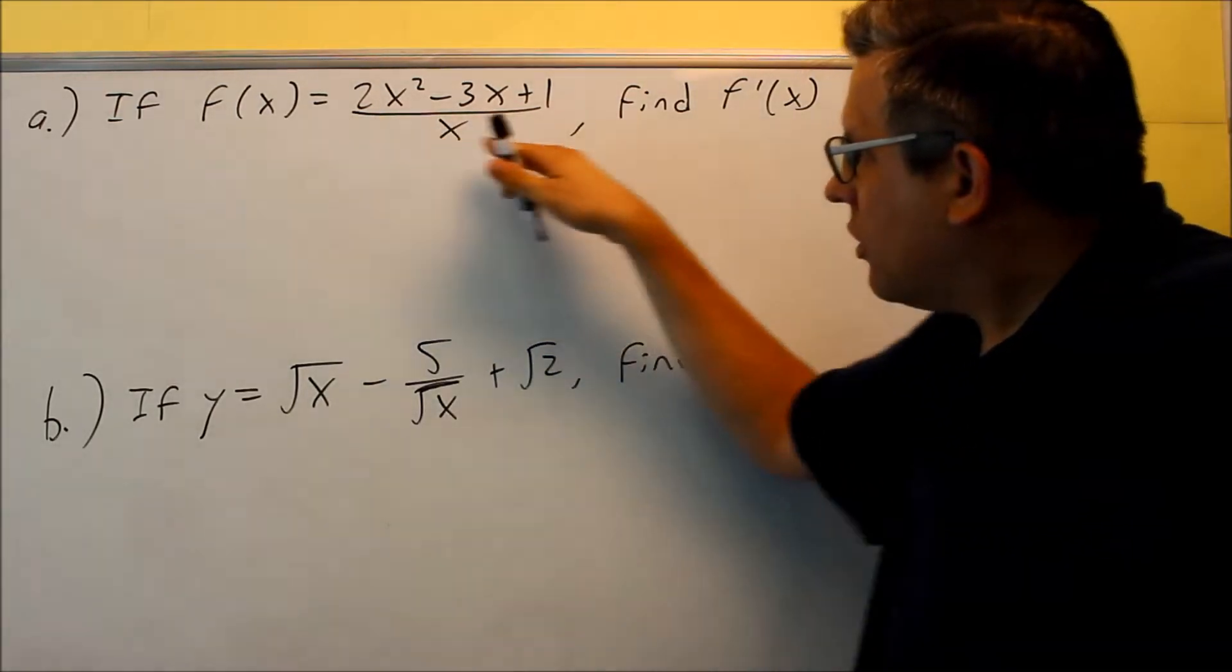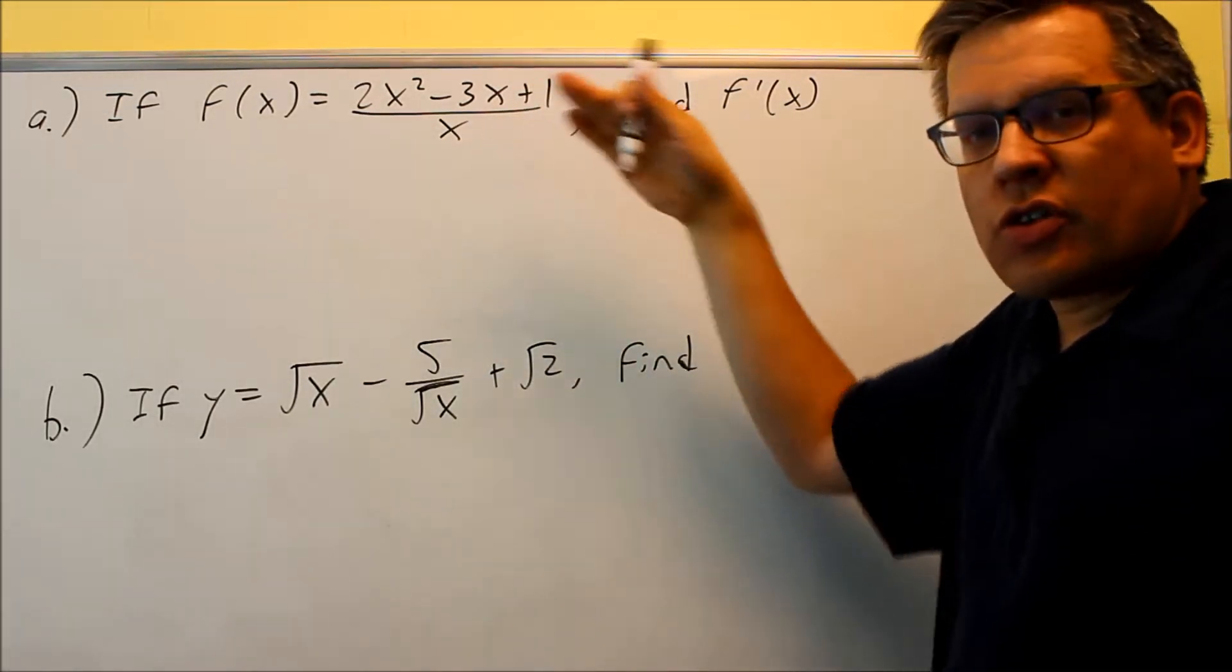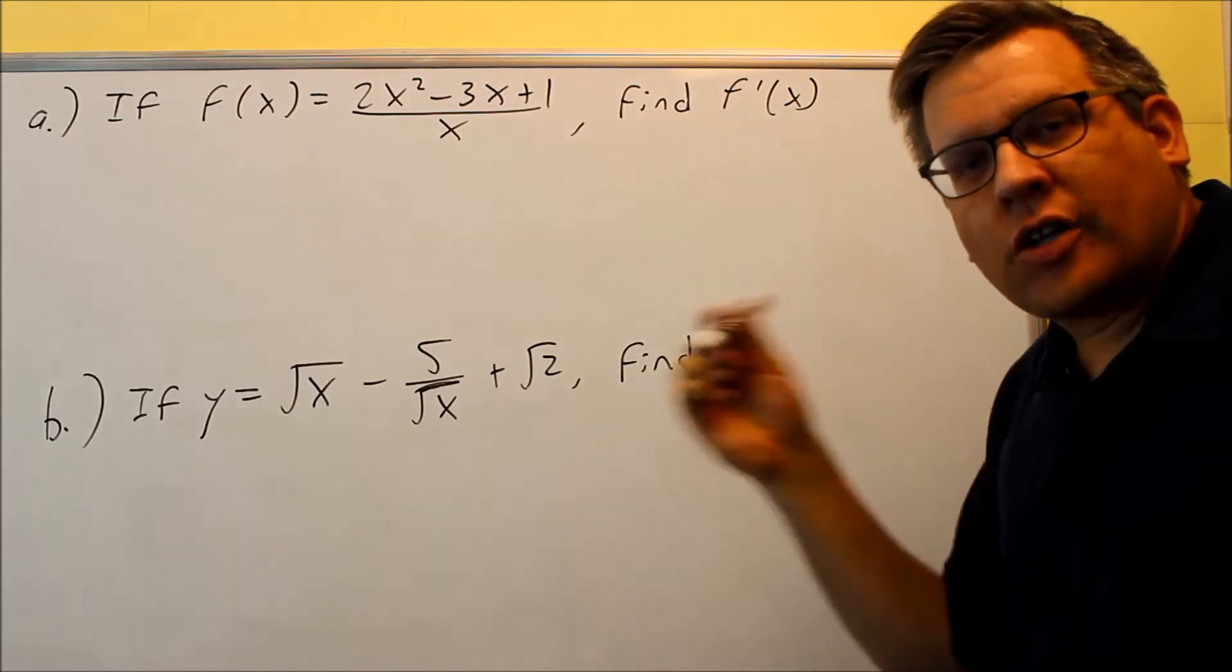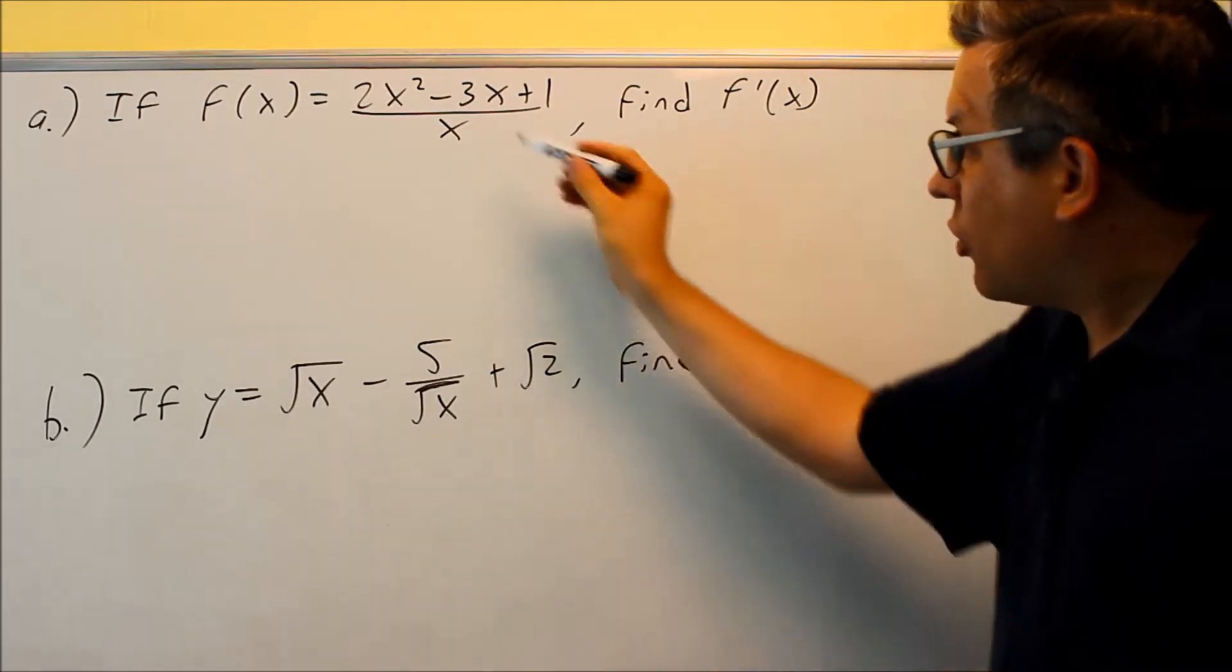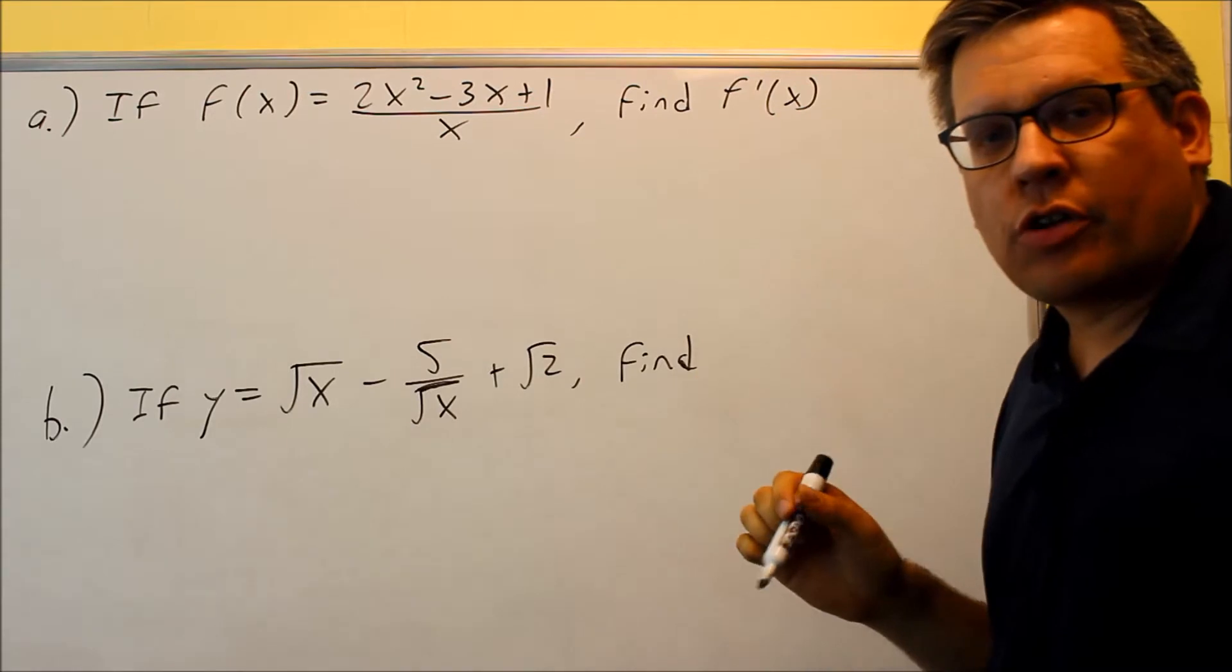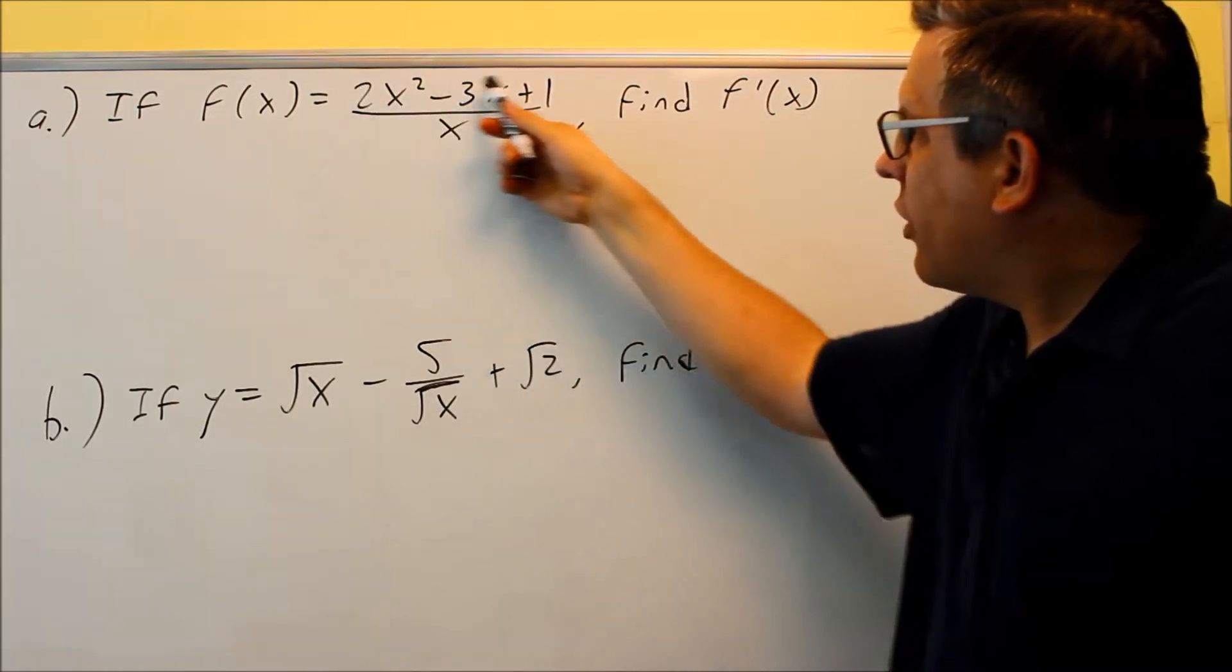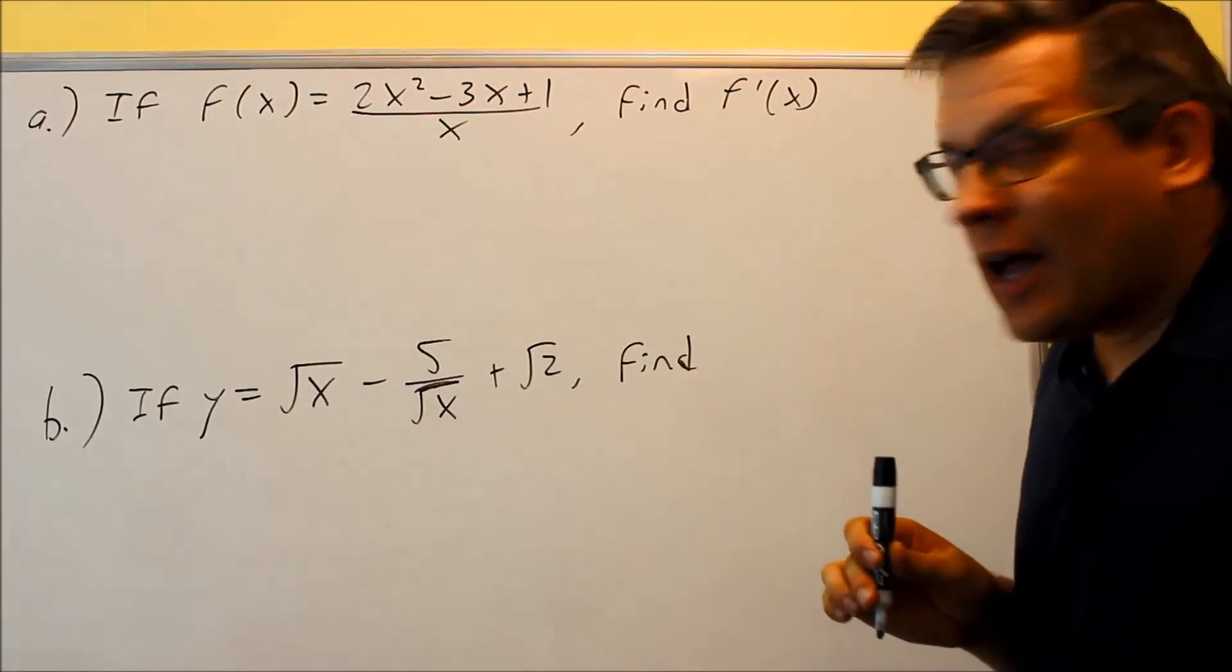For this one, we have a division going on. This one does not require us to do long division or polynomial division because we only have one thing on the bottom. So what you want to do here to make this problem easier is you want to take everything on top and divide it by x.